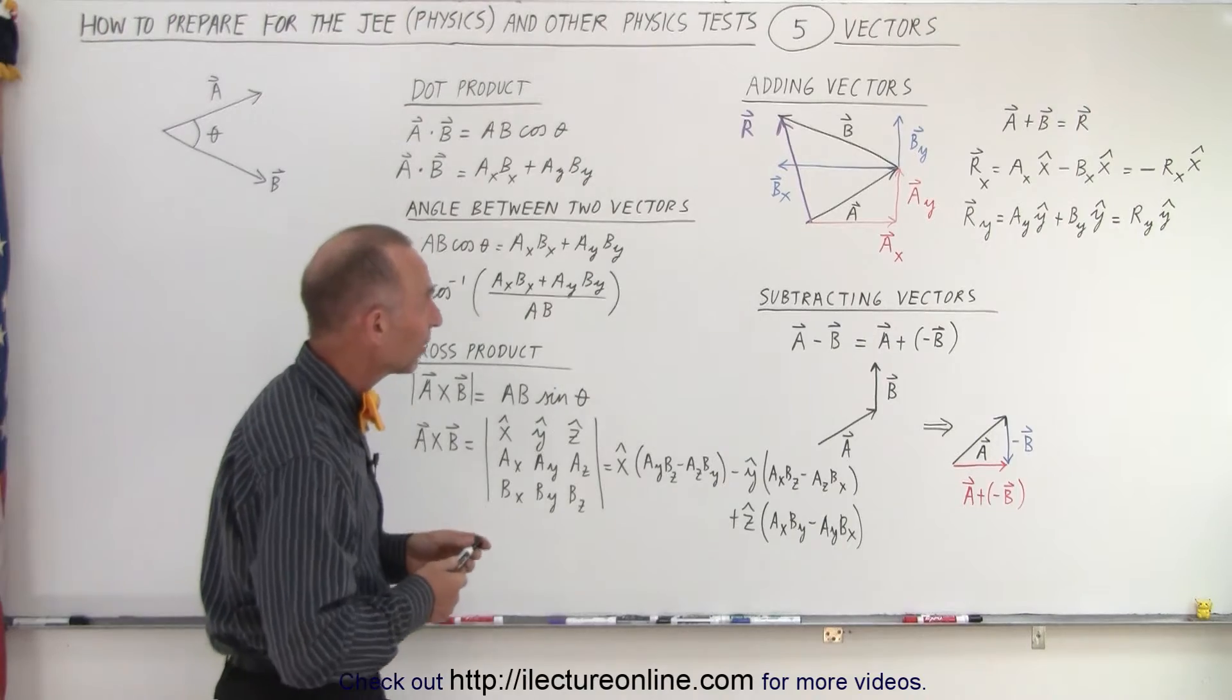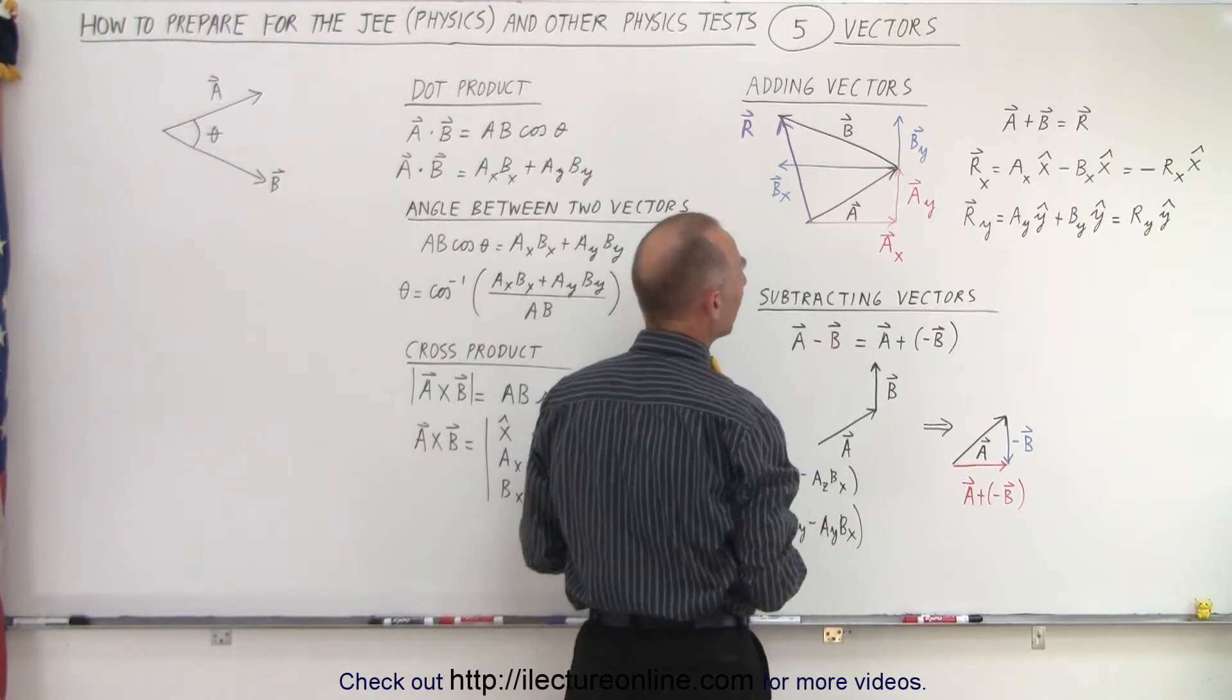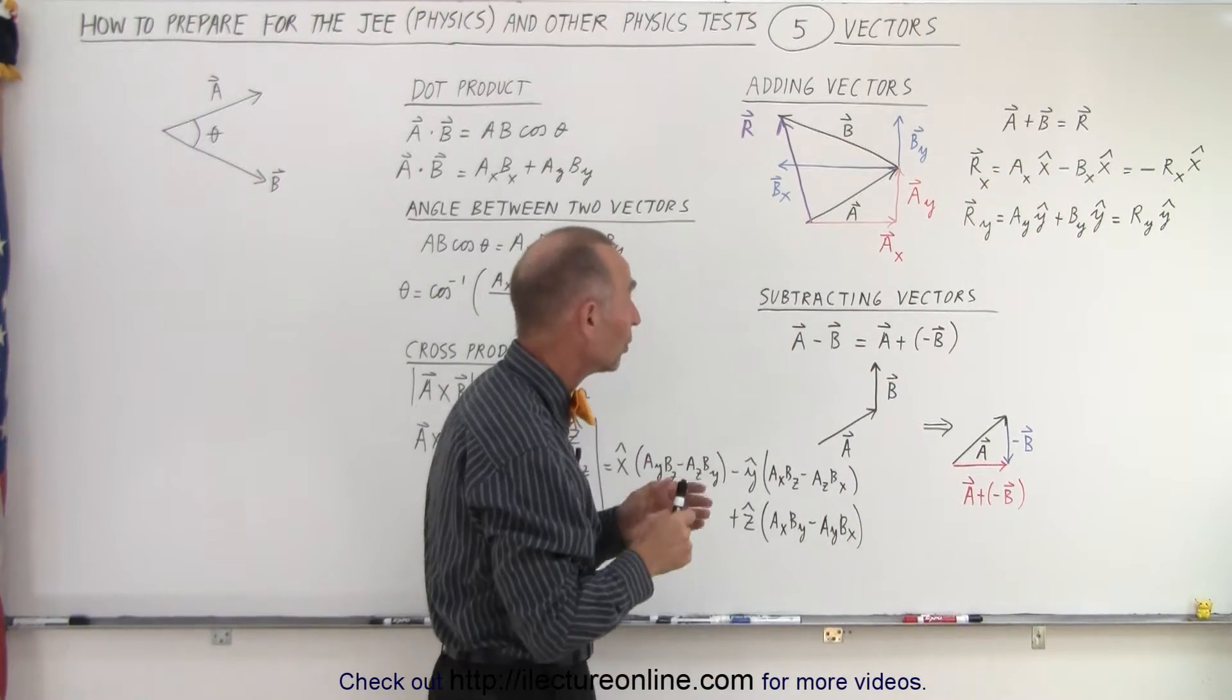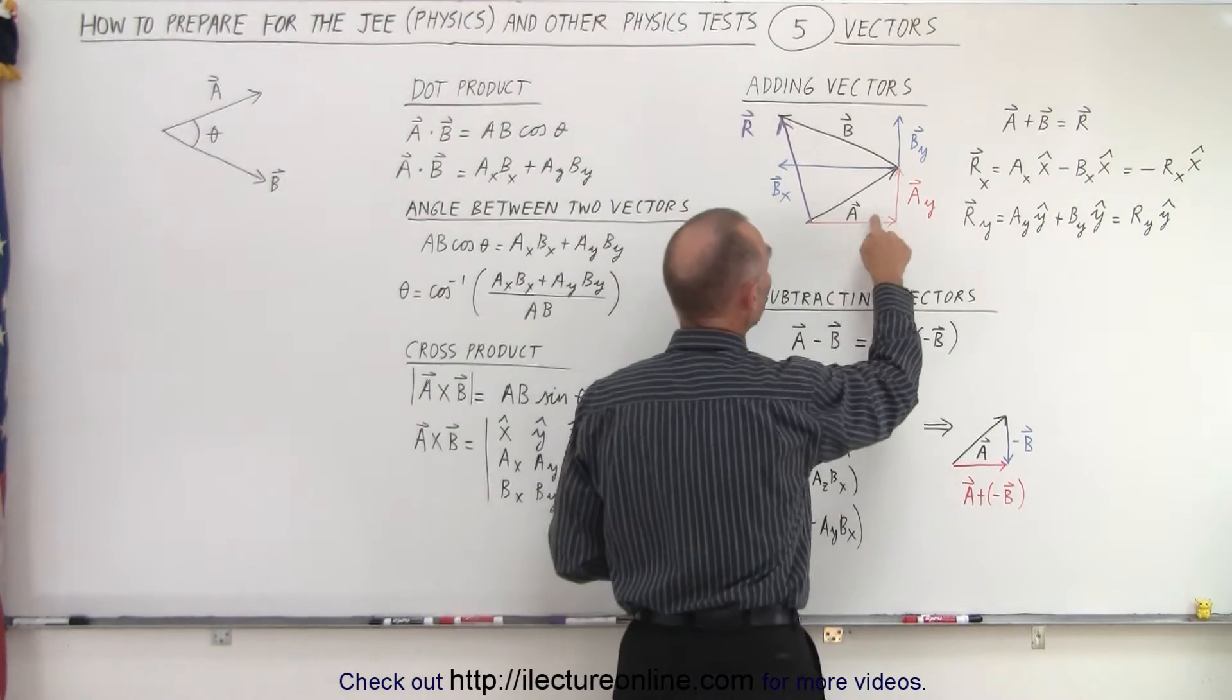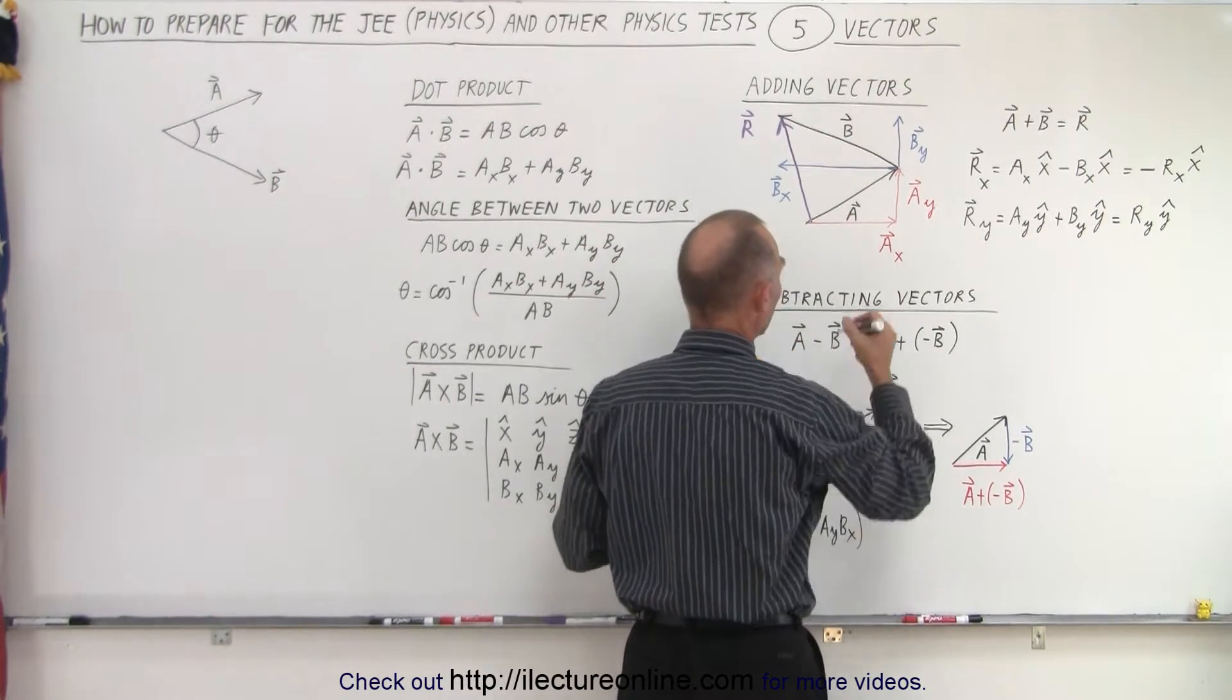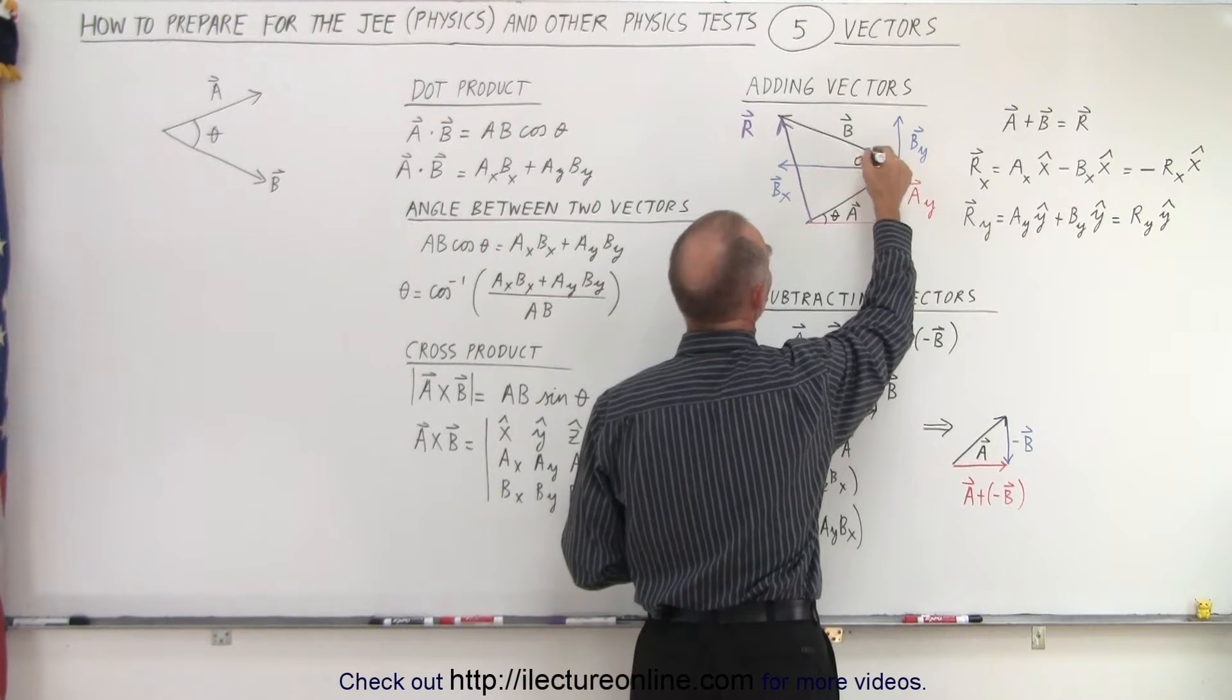So first of all, let's talk about adding vectors. We have two vectors, A and B. When you're going to add them, you're going to get some resultant vector. But to add vectors, what you should do is find the x and y components of each of the vectors first. And that, of course, will depend upon the angle. Let's call this angle theta here. Let's call this angle phi.